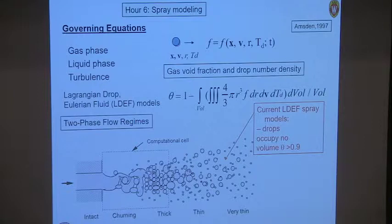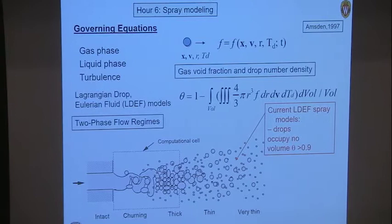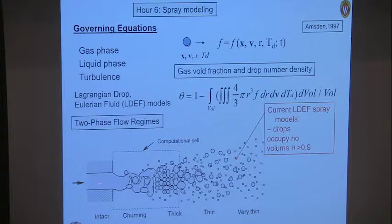Current models assume that the droplets occupy no volume — in other words, the void fraction is very close to one. This is actually not a bad assumption, especially if you have a computational cell that's large compared to the dimensions of the liquid contained in that cell.